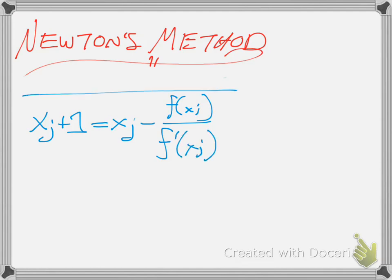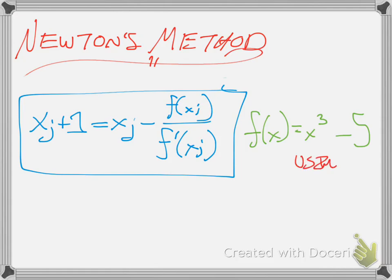Alright, so this is the equation we're going to use, and we're going to use this to evaluate the function f(x) equals x cubed minus 5 using x_1 equals 2. Alright, so we'll be flipping back to this page for a reference point a few times.